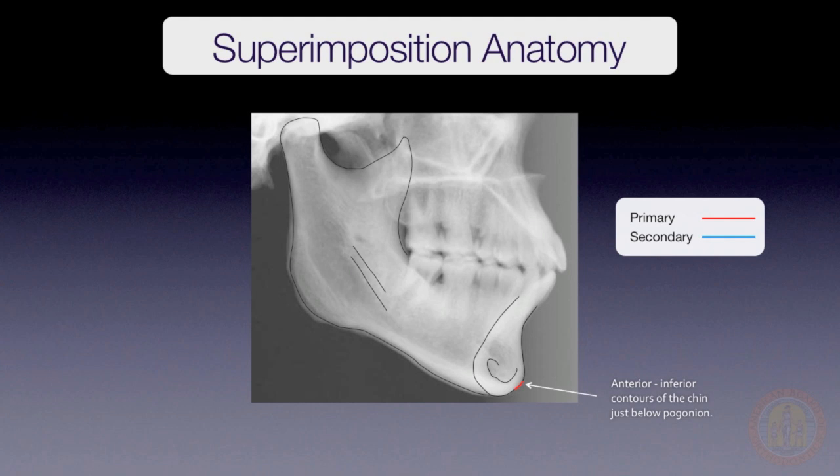The inner contour of the cortical plate at the lower border of the symphysis, located at the most inferior aspect of the trabecular bone, is another primary structure that is stable.